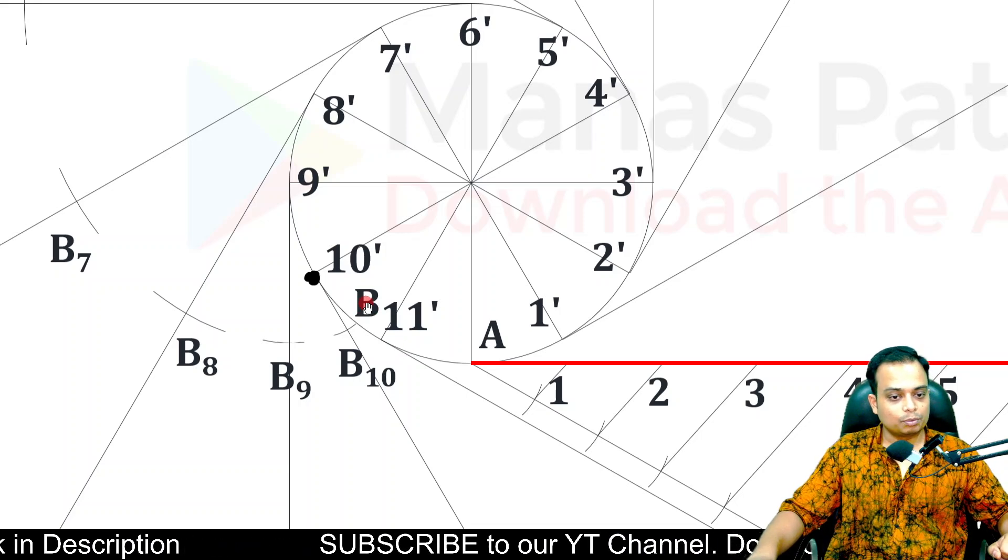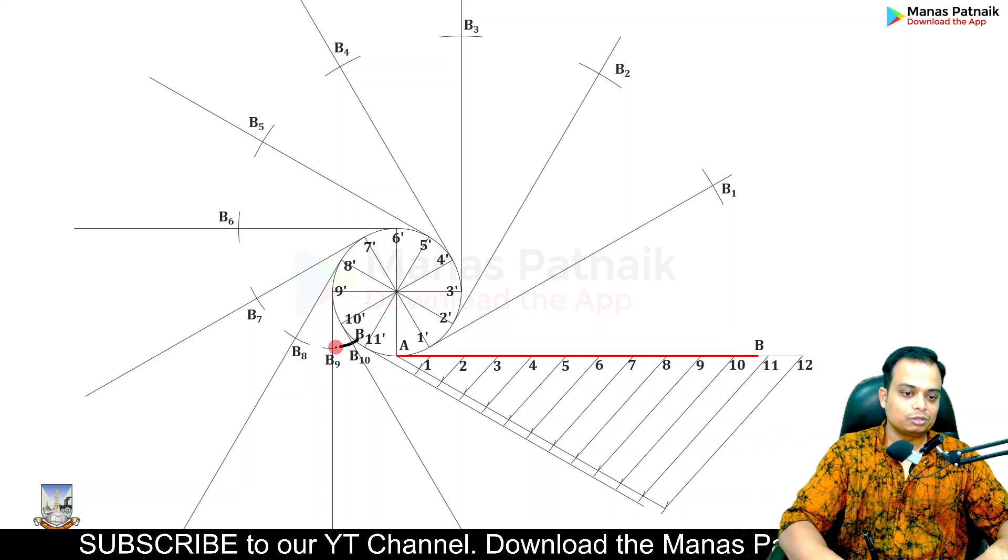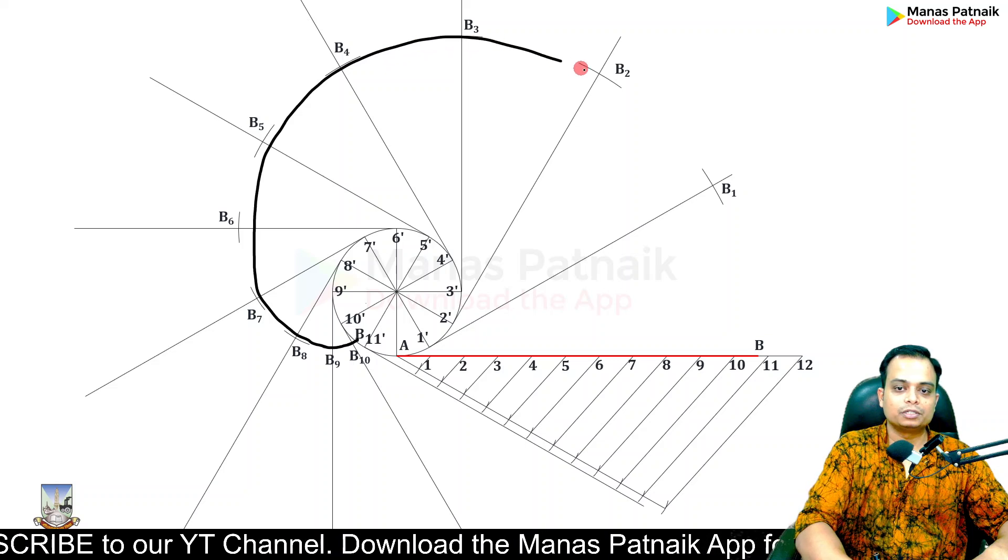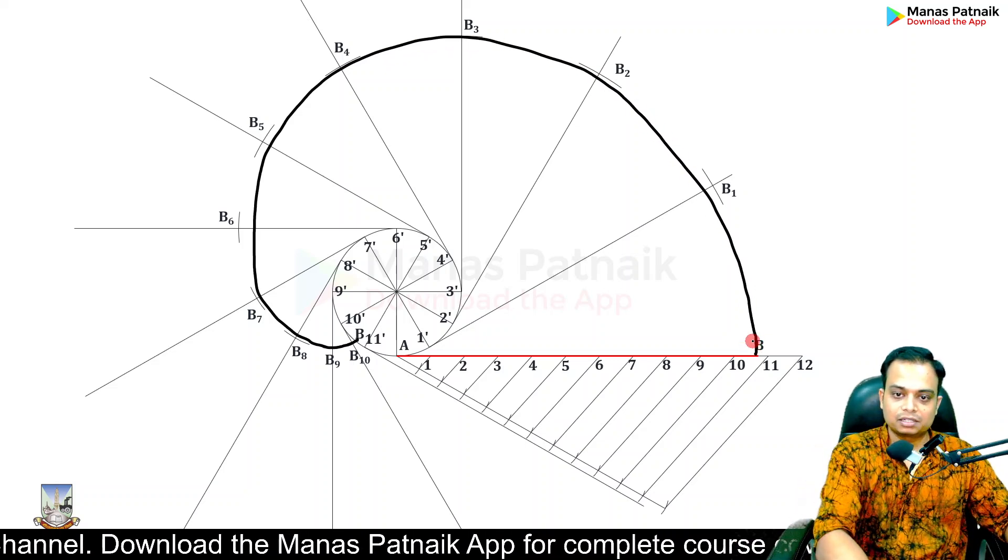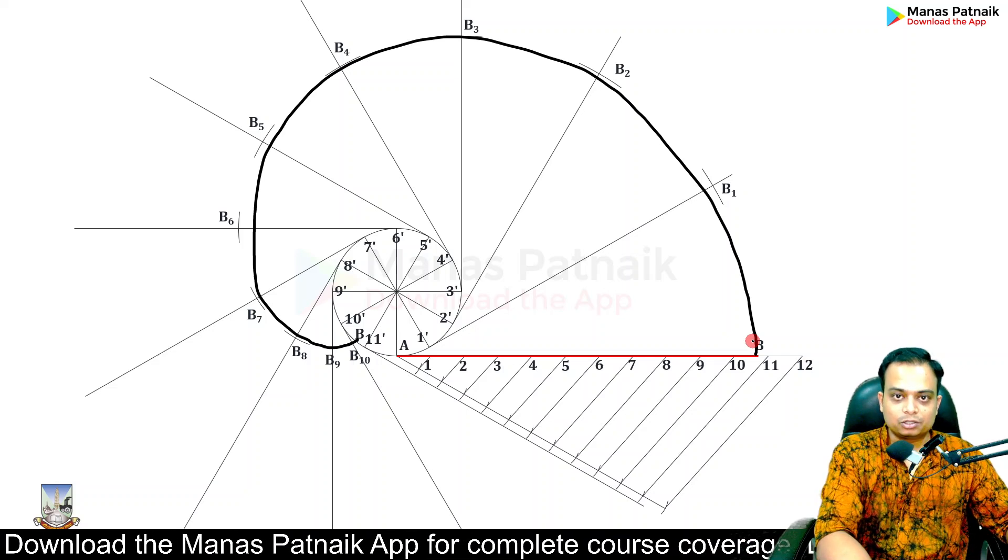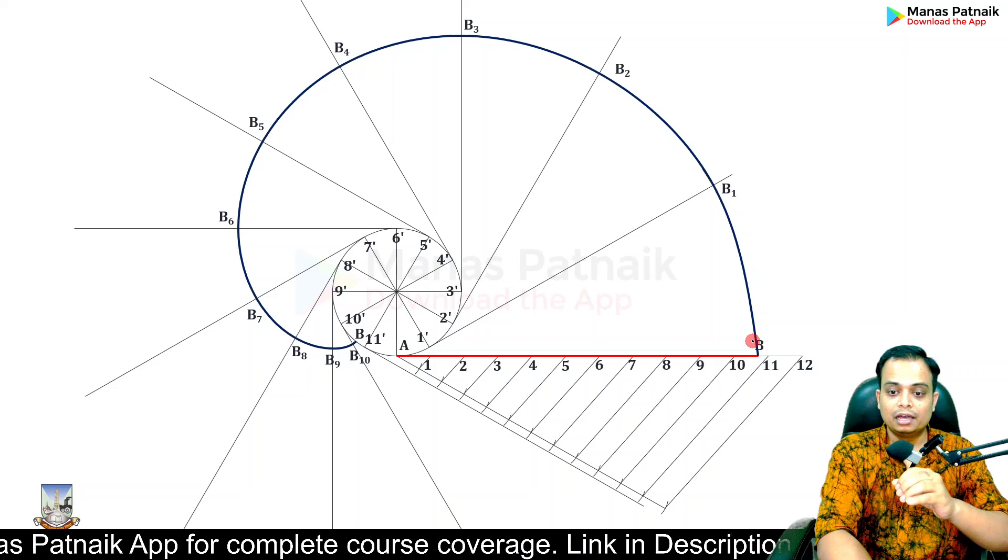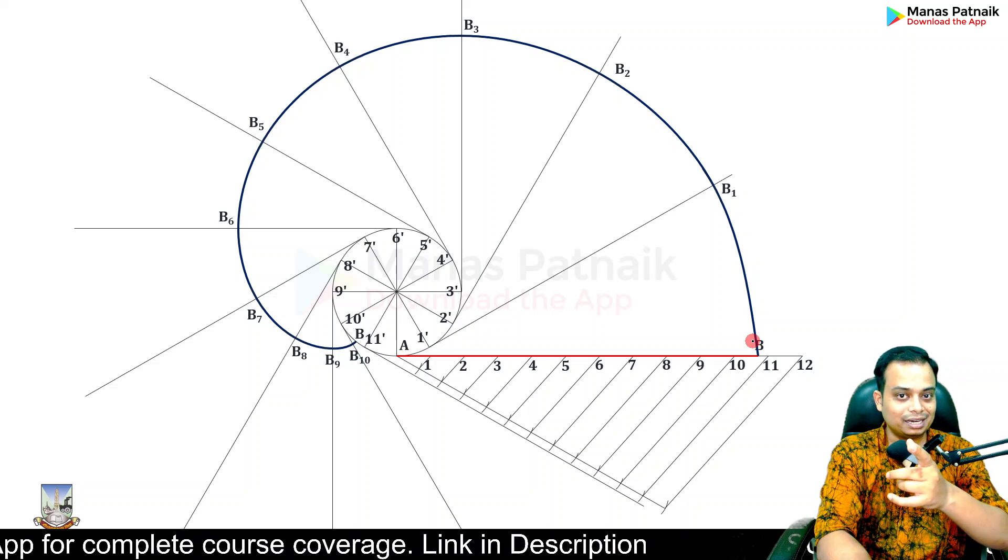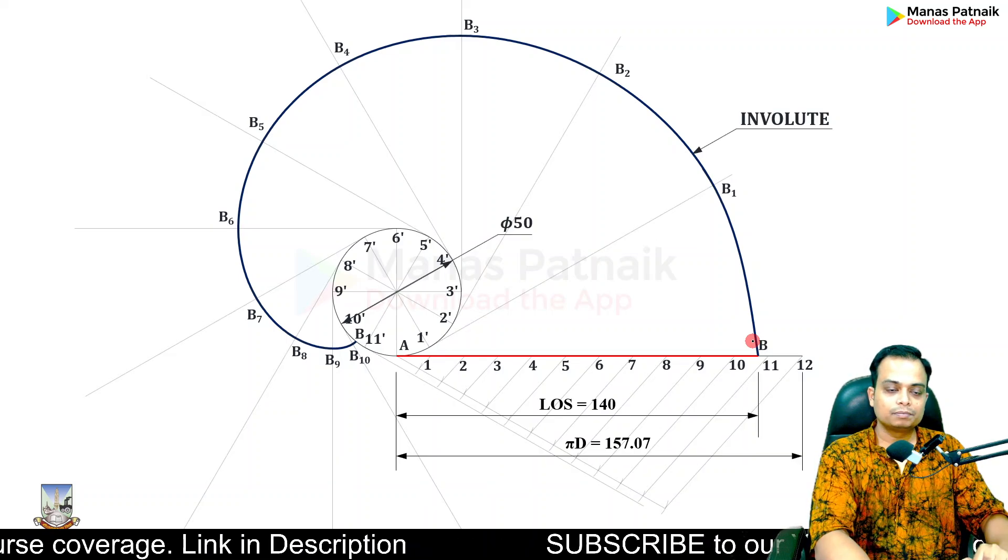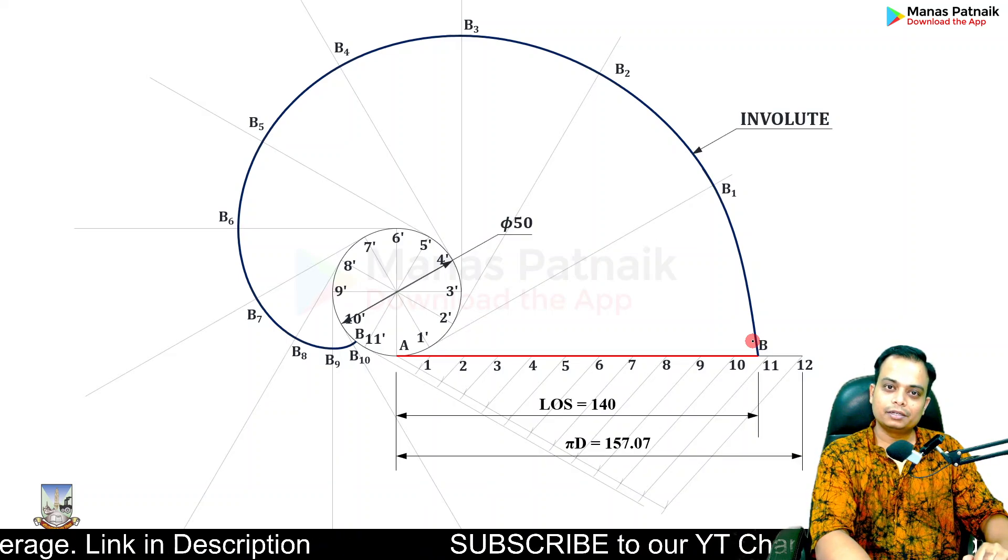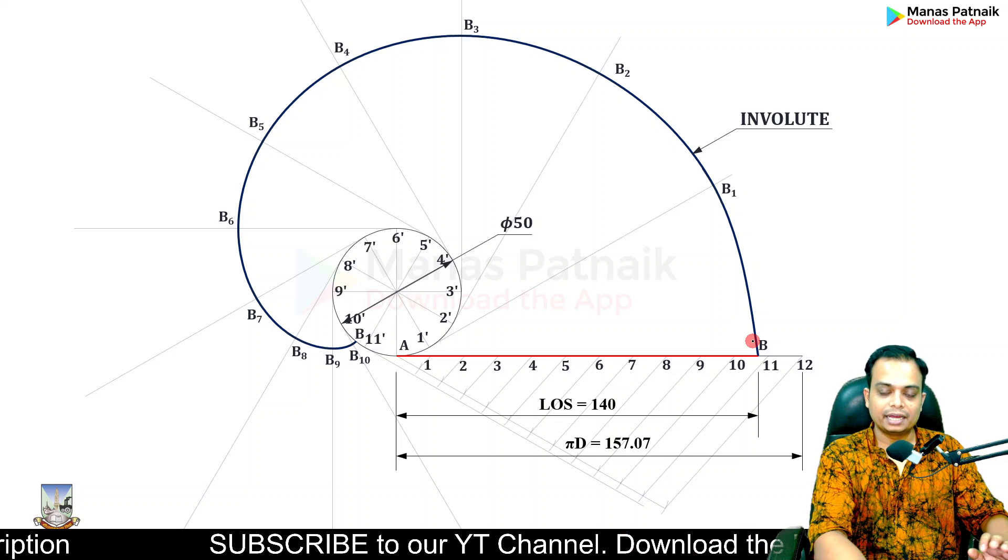The construction is done. What you now need to do is join all of these points in proper sequence, and this is going to give rise to a beautiful curve known as an involute. The construction work should be very light, and you also need to do some dimensioning as shown in the next slide. Keep it light, grayish, very light.